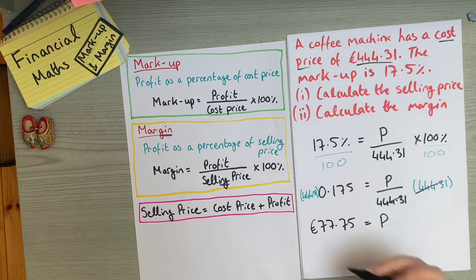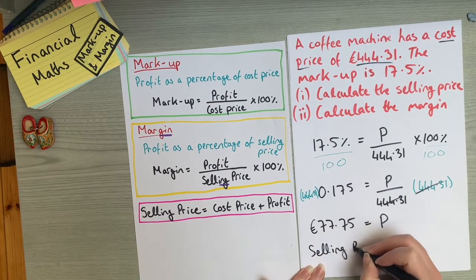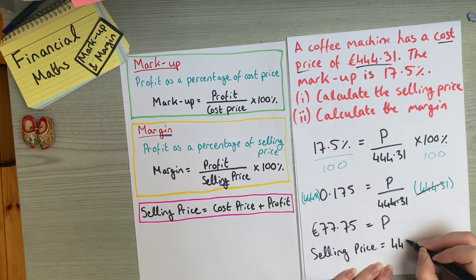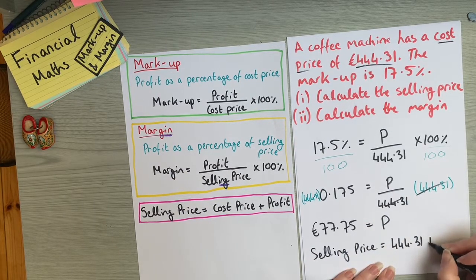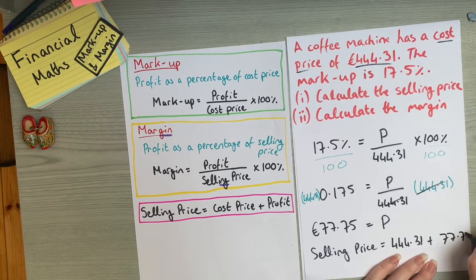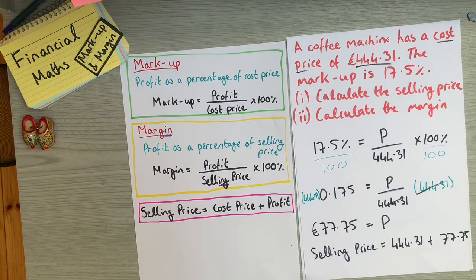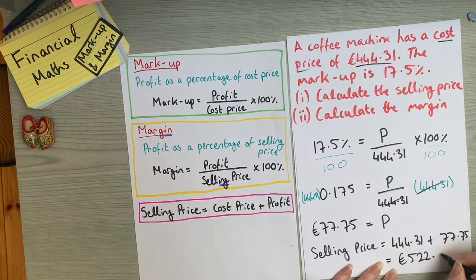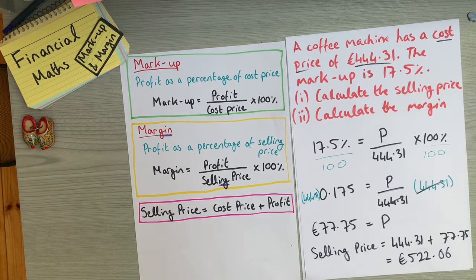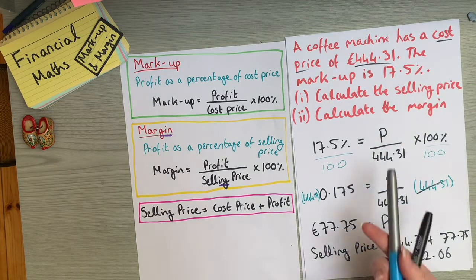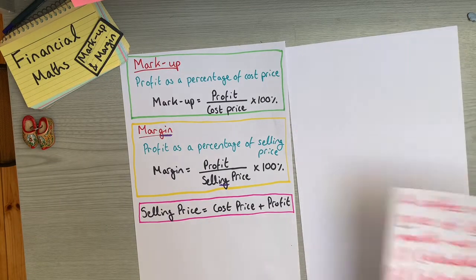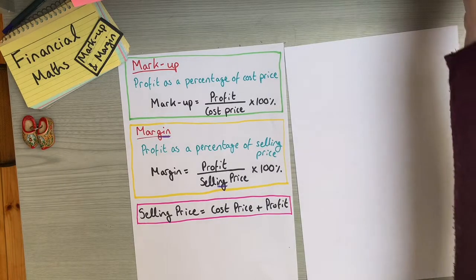Now we can calculate the selling price: selling price = cost price + profit = €444.31 + €77.75 = €522.06. That's what the shop sold the coffee machine for in order to have a markup of 17.5%. The next part of the question asks us to calculate the margin.